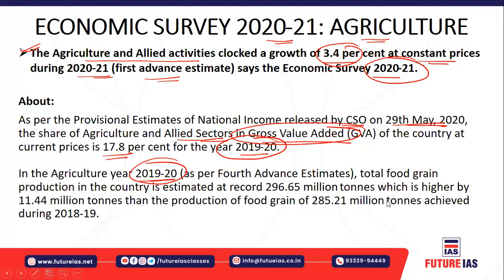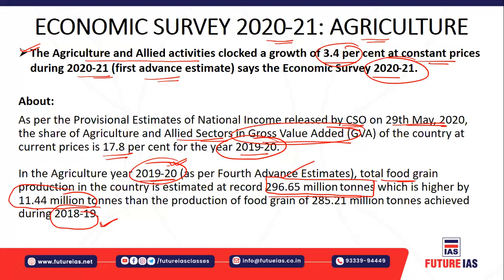Total food grain production — including wheat, rice, etc. — stood at 296.65 million tons in 2019-20, which is on the higher side compared to the previous year. In 2018-19, there was comparatively less food grain production, so in 2019-20 around 11.44 million tons of additional food grains were produced.